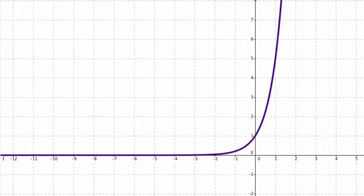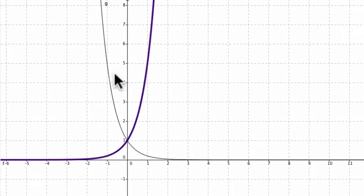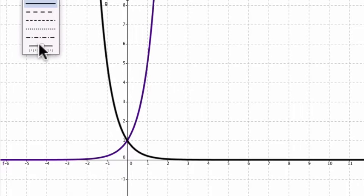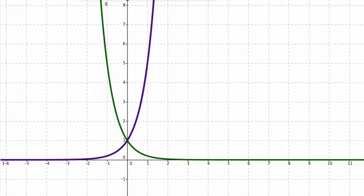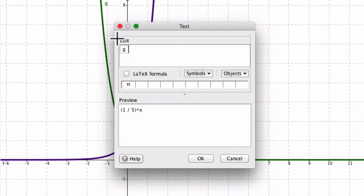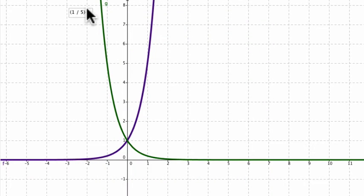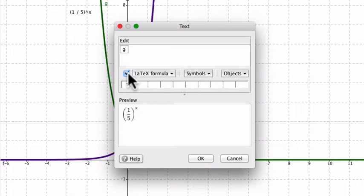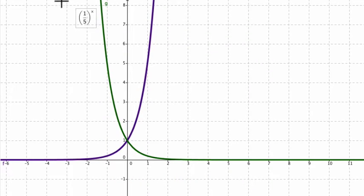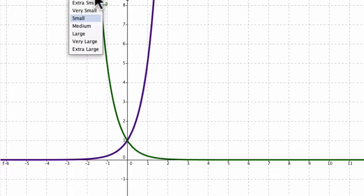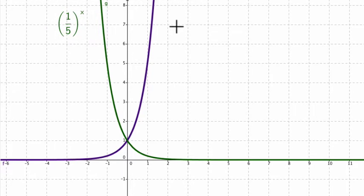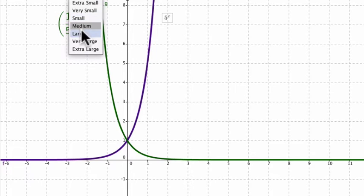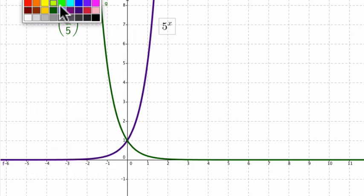Also, if we have a fraction base, let's say 1 fifth to the x, we can see that that looks a little different. I'm going to color code this. This function right here, I'm labeling with the text on the left, and this function here on the right. You can see how their shapes are different, but this is what you'll typically be seeing.